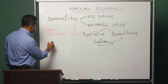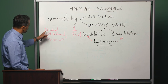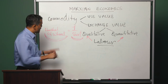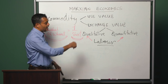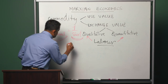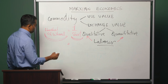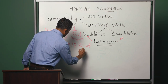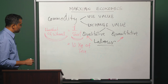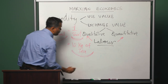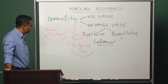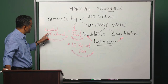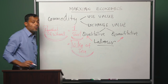Let us take an example. Let us say one bushel of wheat exchanges for one shirt. This is saying that the amount of labor that has gone into producing one bushel of wheat is exactly equal to the amount of labor that has gone into producing one shirt — that is why one bushel of wheat exchanges for one shirt. If, for instance, one bushel of wheat exchanges for 10 kilograms of tea, then we would be saying that the amount of labor necessary to produce 10 kilograms of tea is exactly equal to the amount of labor necessary to produce one bushel of wheat, and that is why they exchange in the ratio 1 to 10.